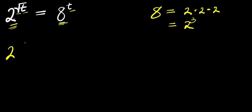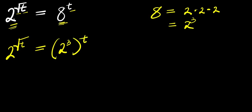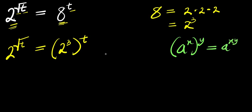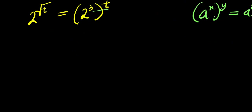So I have 2 power square root of t equals 2 to the power of 3, and this is raised to the power of t. Now, if you have a power x to the power of y, this equals a power x times y. So I can multiply this exponent. That means I will have 2 power square root of t equals 2 power 3t.